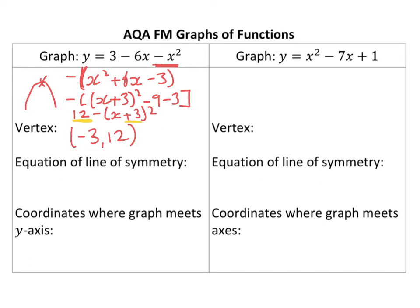Now, the line of symmetry is going to be x equals minus 3. It looks like this goes through there, doesn't it? Because it's a parabola. So, there you go.